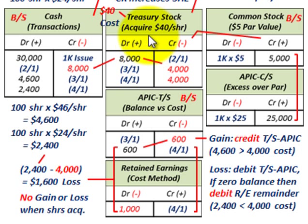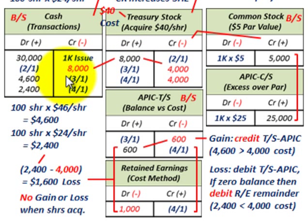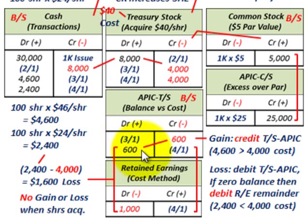With the treasury cost method, you're dealing with the cost you actually paid for acquiring your stock. Cash receipts are balanced against the cost on a per-share basis, and those flow into your additional paid-in capital. You can only reduce your additional paid-in capital to the amount sitting in the balance. On a loss, you debit additional paid-in capital, and if you have a zero balance, any further loss flows into your retained earnings.